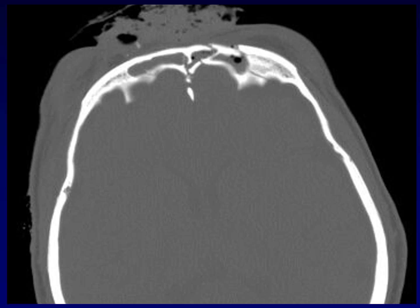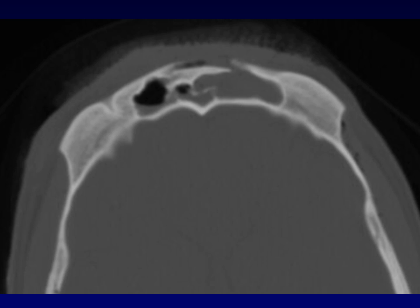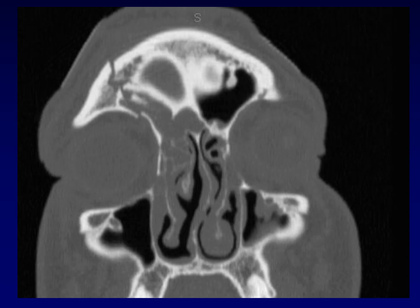The fracture line extends through the intersinus septum, and there are comminuted components of all of these fractures. Here's an example where the posterior table is intact, but there is a displaced anterior table fragment that is posteriorly displaced, and you can see how this has disrupted the intersinus septum. Remember that frontal sinus fractures may extend into surrounding structures — you can see where the fracture plane through the roof of the frontal sinus continues down into the orbital roof.